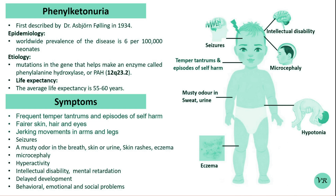Phenylalanine is converted to tyrosine by the enzyme Phenylalanine hydroxylase. This reaction requires tetrahydrobiopterin (BH4) as a co-factor, and primarily occurs in the liver.